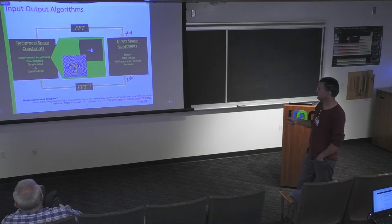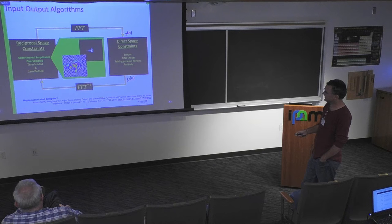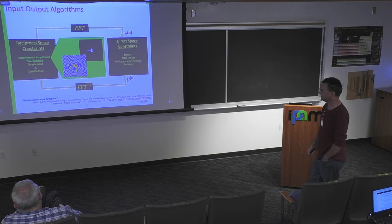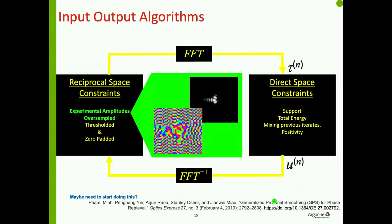In reciprocal space, everybody uses the standard approach: take the Fourier transform of your current image, get a set of phases, combine those with the experimental amplitudes, and keep looping. I was talking to Min this week at his poster, and he convinced me we should probably start implementing the proximal smoothing ideas he worked on years ago. I'm going to go home and add that to Cohere — it should be a fairly easy addition — and see if it helps use the data more effectively.